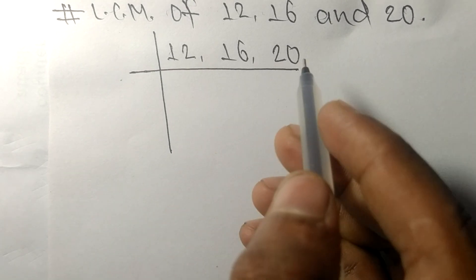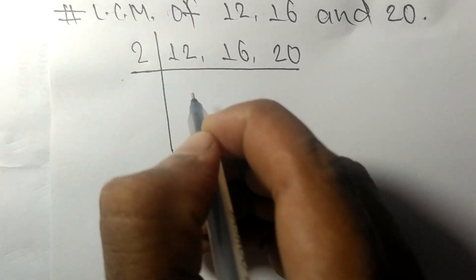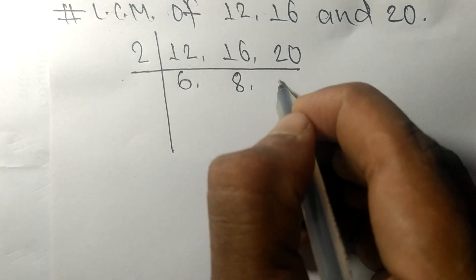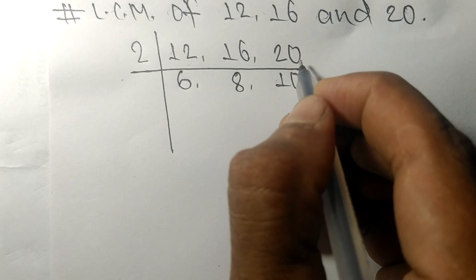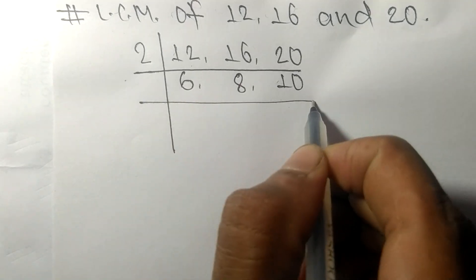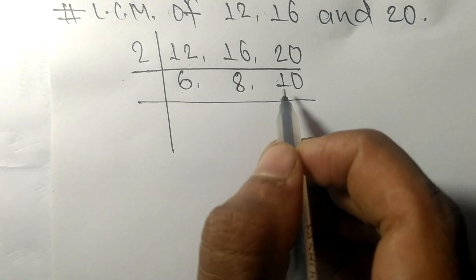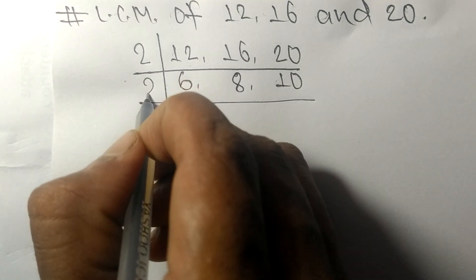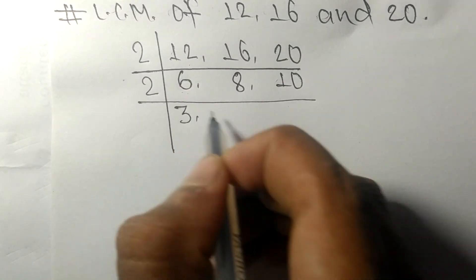These numbers are divisible by 2. 2 times 6 means 12, 2 times 8 means 16, 2 times 10 means 20. Now we got 6, 8 and 10, which are exactly divisible by 2. 2 times 3 means 6, 2 times 4 means 8, 2 times 5 means 10.